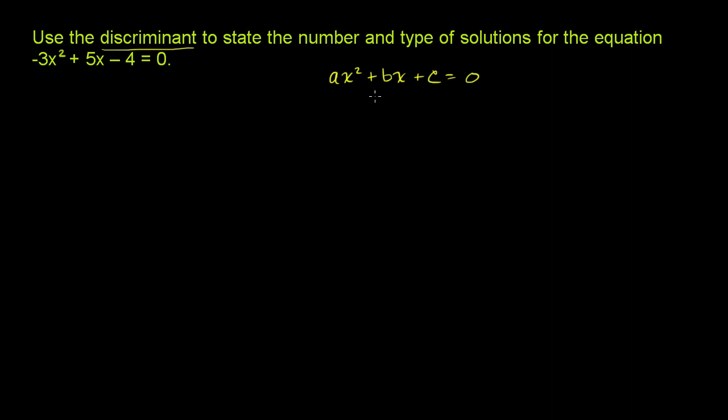we know that the quadratic formula, which is really just derived from completing the square right over here, tells us that the roots of this, or the solutions of this quadratic equation, are going to be x = (-b ± √(b² - 4ac)) / 2a.